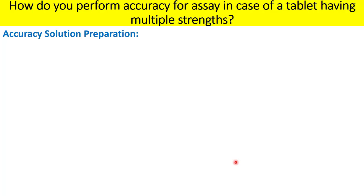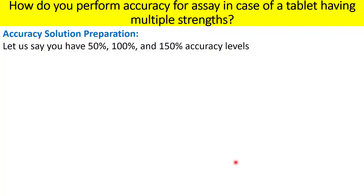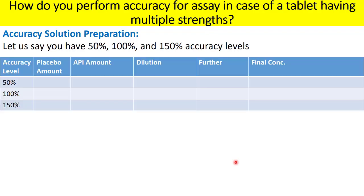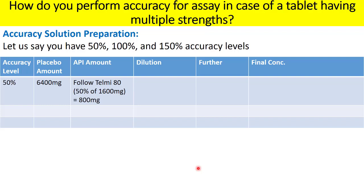Now let us understand how to prepare the accuracy solutions at three different levels according to the protocol: 50%, 100%, and 150%. The first important step is the amount of placebo to be taken — we have already discussed that 6400 mg is used as the worst-case placebo. The second step is the amount of API to be used, and then the further dilution details will be discussed.